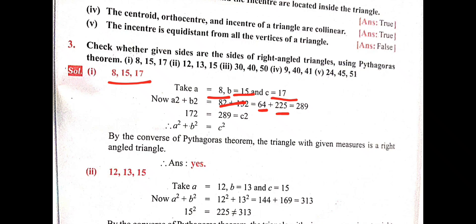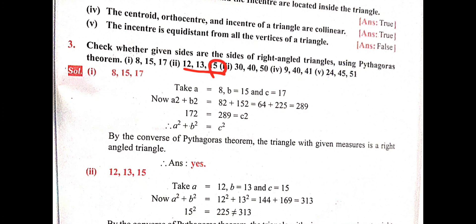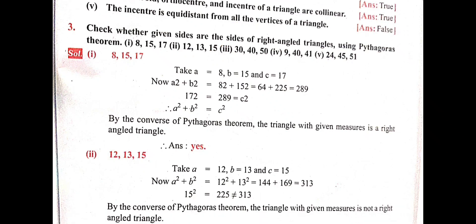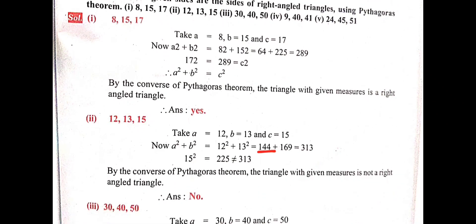Since c² = 17² = 289, and a² + b² = 289, this is a right-angle triangle. For the second set — 12, 13, 15 — the greatest number is 15, so 15² = 225. But 12² + 13² = 144 + 169 = 313, and 313 ≠ 225, so this is not a right-angle triangle.